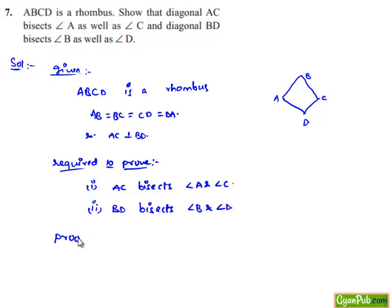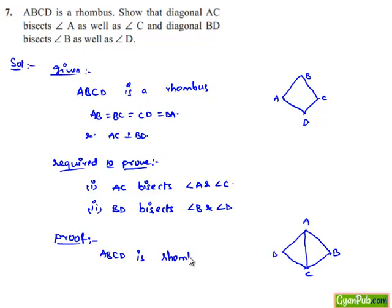Now in order to prove this, let us follow the procedure. Let us consider the rhombus ABCD and initially consider only AC as the diagonal. If we observe, the rhombus is clearly divided into two triangles: triangle ADC and triangle ABC.